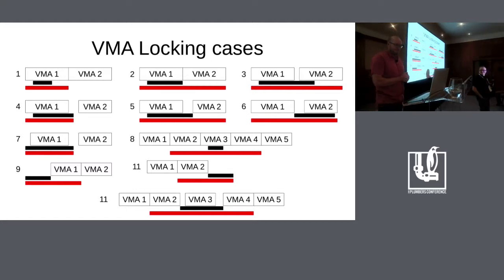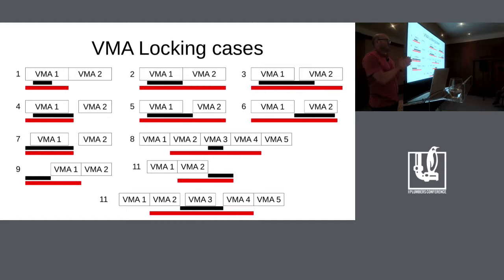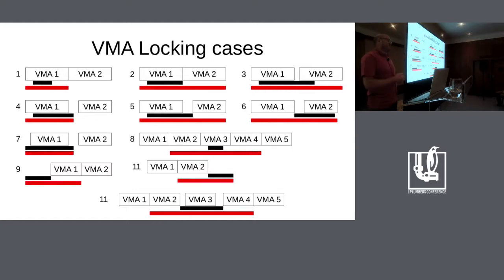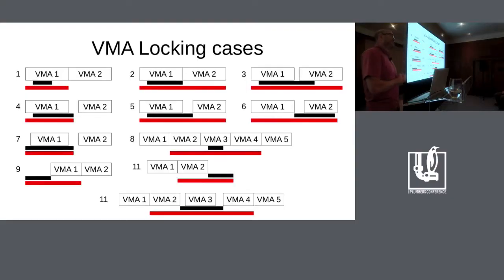In a particular case where you do an mmap that overrides part of a VMA and extends beyond it, you lock the whole VMA plus the part beyond it, to prevent another thread from placing a new VMA there. The VMA lock range can be extended beyond the VMA's original boundary.